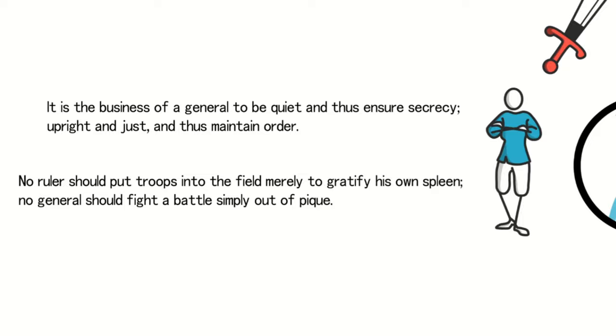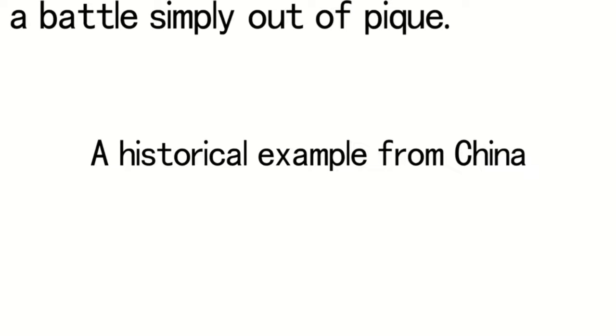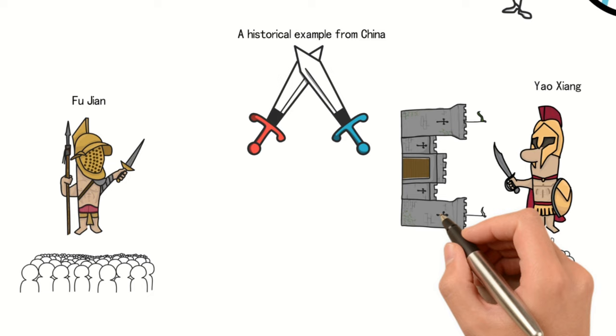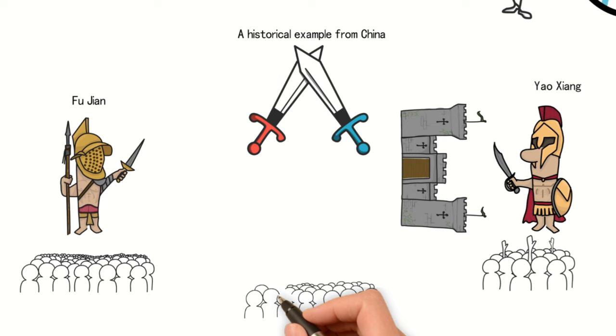A historical example from China occurred 1700 years ago. Fujian attacked Yao Xiang, but due to the overwhelming difference in military strength, Yao Xiang could only defend the city and not come out to fight. The best strategy at this time was to wait for reinforcements and let the enemy retreat due to lack of timely logistical supply.